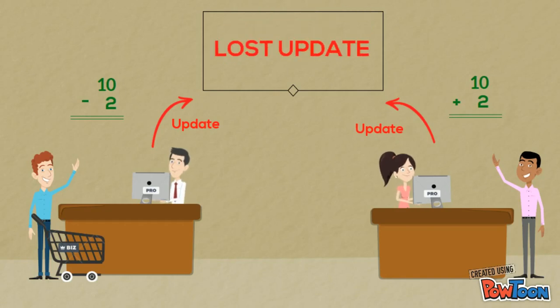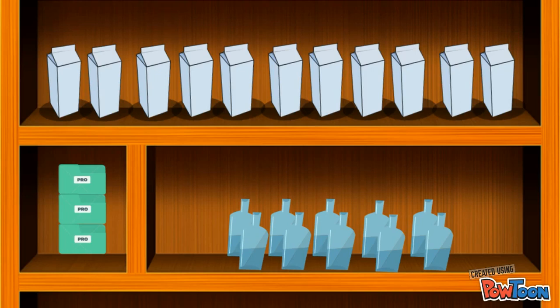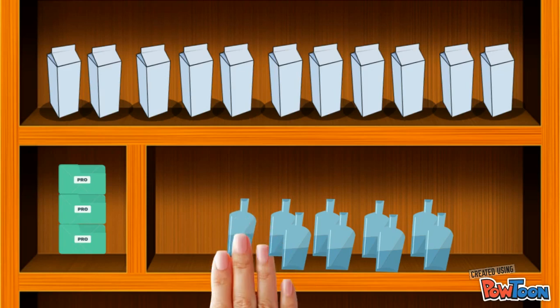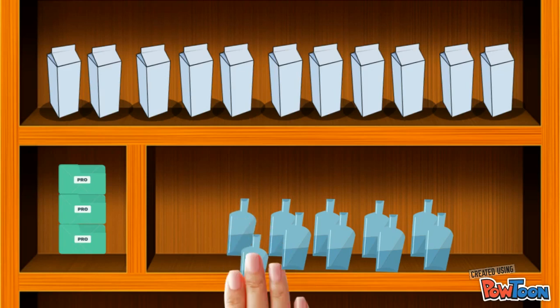Let's take a look at the shelf. We initially had 10 items in stock. Two were sold, and two were restocked. Thus we still have 10 items on the shelf. However, due to the update of the sale being lost, the units sold is seen as missing stock. The stock taker expected 12 units to be on the shelf instead of 10.